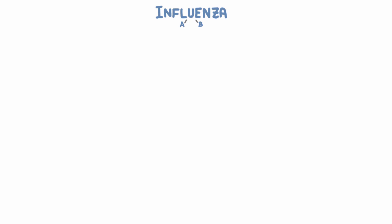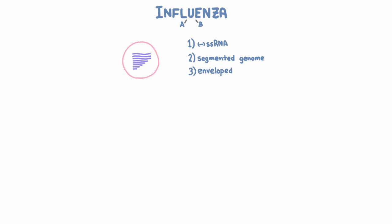To start, you're going to need to know three things about influenza. First of all, its genome is single-stranded negative RNA. Second of all, its genome is segmented, so there are actually eight strands of negative RNA. And finally, it's enveloped with two key proteins in the envelope: hemagglutinin and neuraminidase.